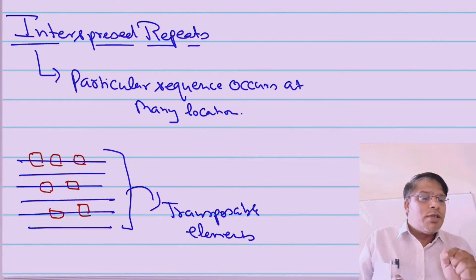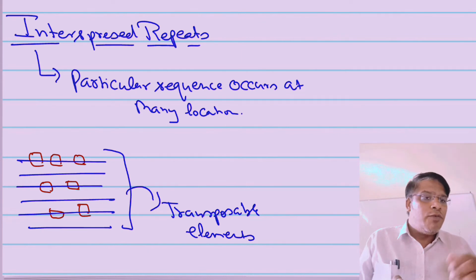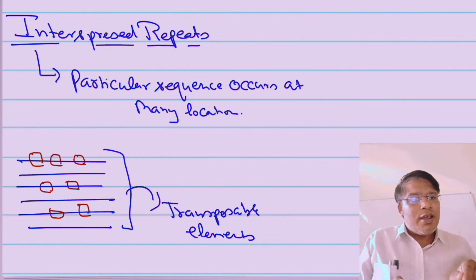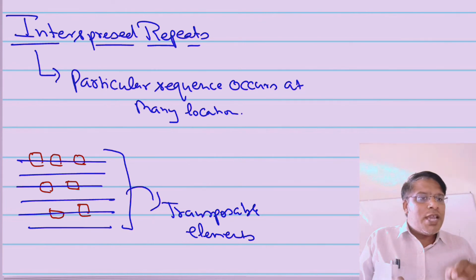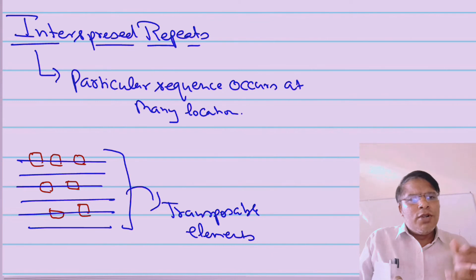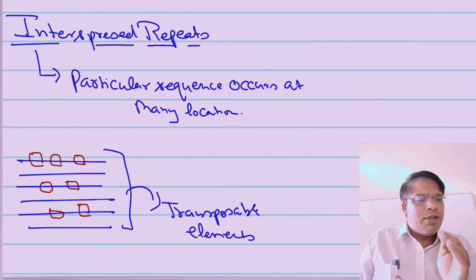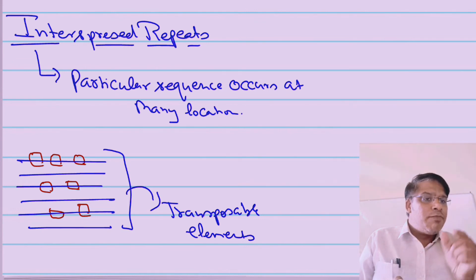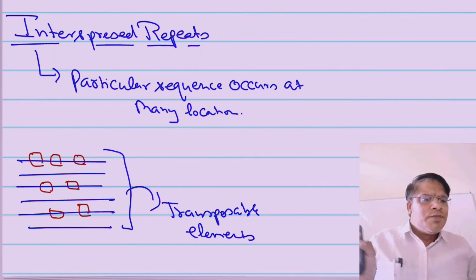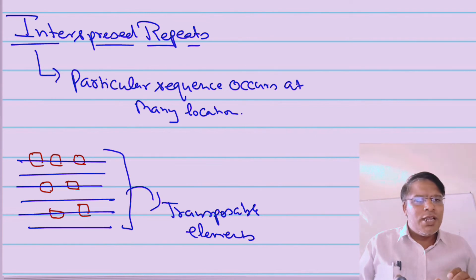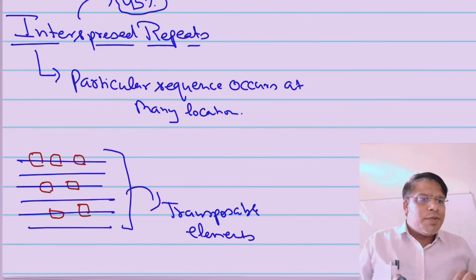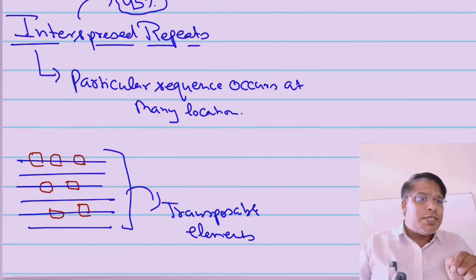One of the best examples of interspersed repeats is transposable elements, also known as jumping genes or selfish genes. We will have more discussion about transposable elements in another video. But you must remember that transposable elements are present in multiple copies and are distributed throughout the whole genome.